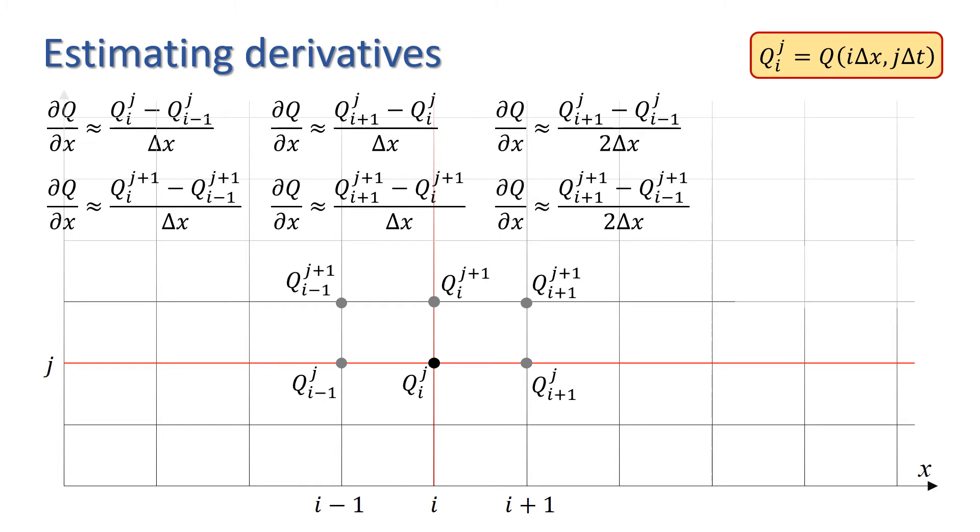For the time derivative, dQ/dt, we need to take a forward difference approximation, because we always step forwards in time from an initial condition. But this could be at either the ith node, or the i plus 1th node, or even at the i minus 1th node.